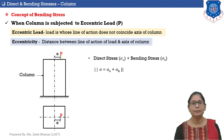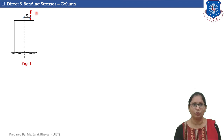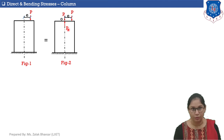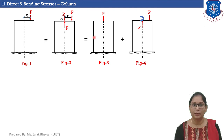Let's discuss the concept of direct and bending stresses in more detail. In figure 1, the column section is subjected to eccentric load P. The same column section can be represented as in figure 2, where the eccentric load P acts along with two equal and opposite loads applied at point O, which cancel each other's effect. In figure 3, the column section is subjected only to the axial load P.